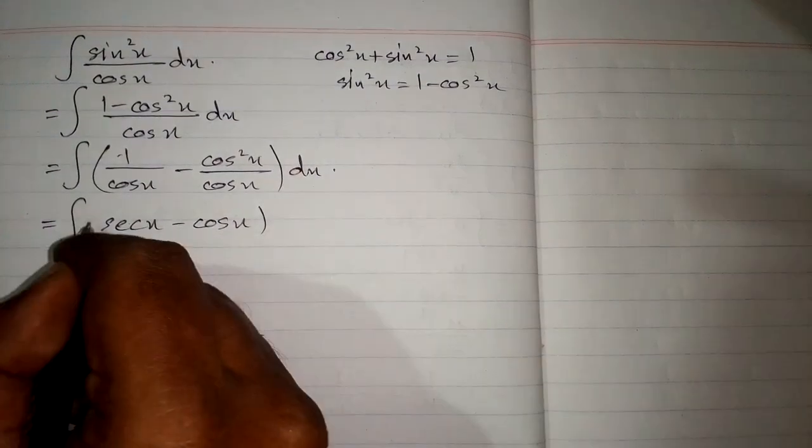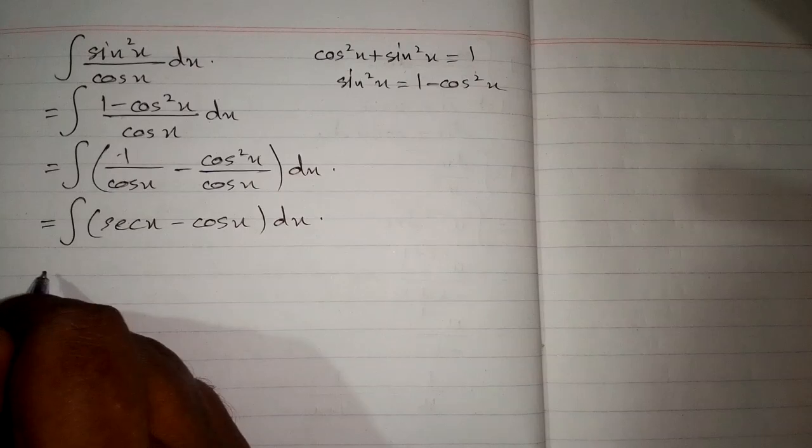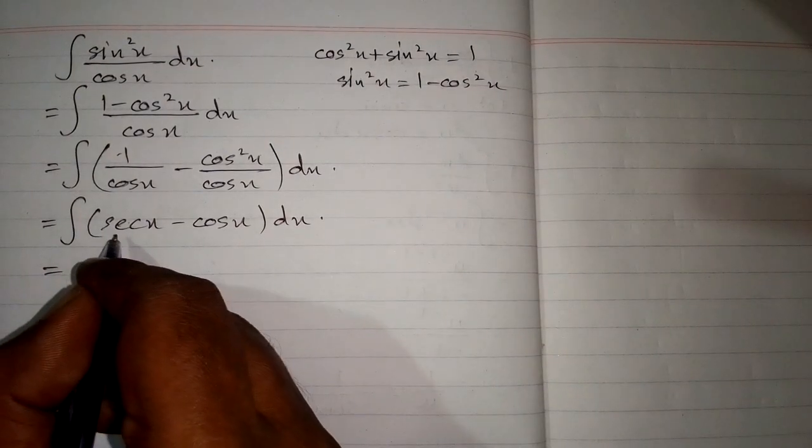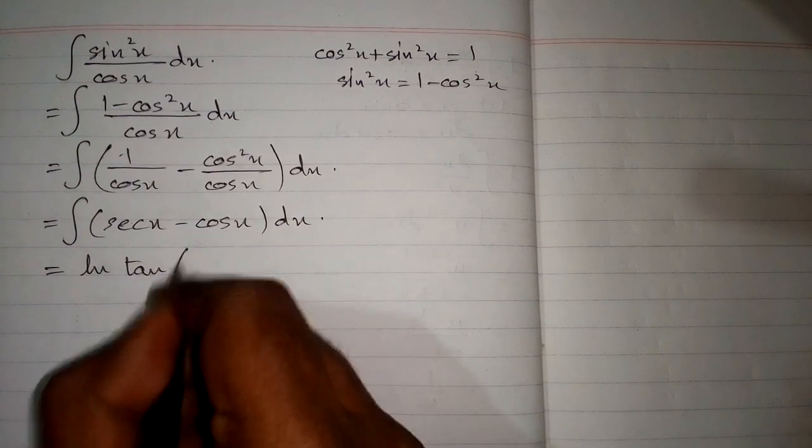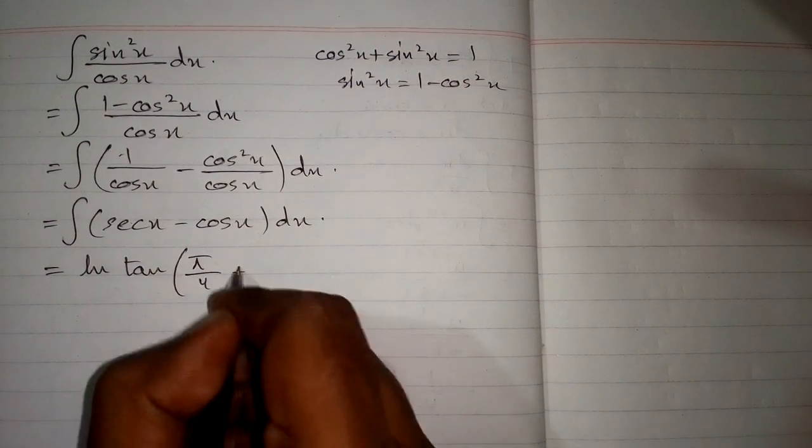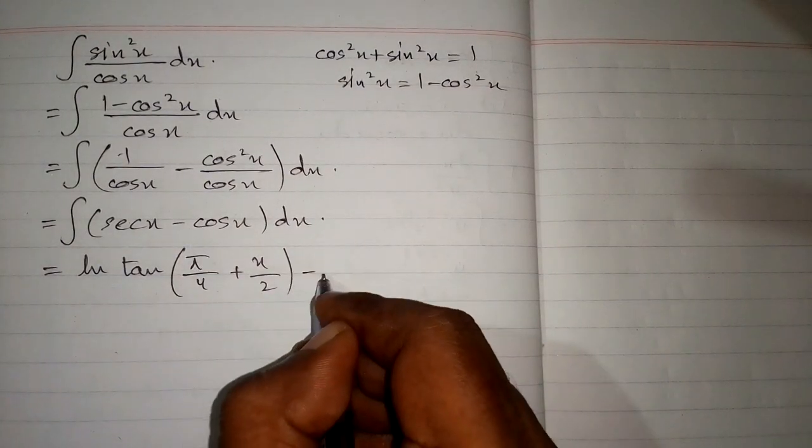Now the integral of sec x is ln(tan(π/4 + x/2)), and the integral of minus cos x is minus sin x.